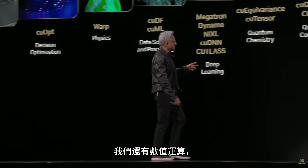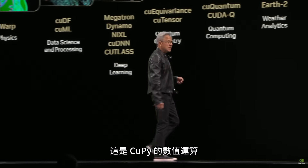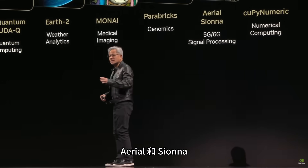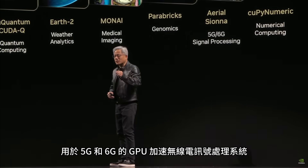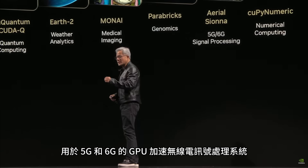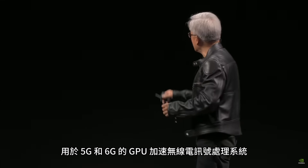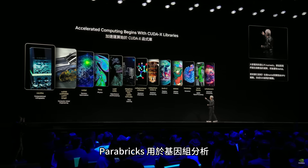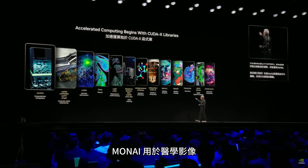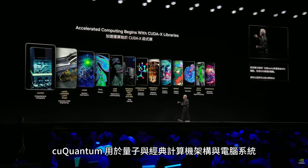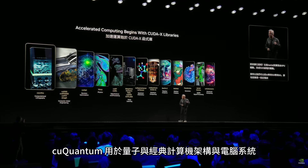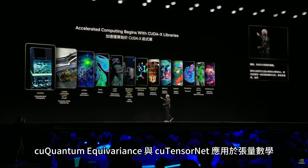We also have numerics. This is CUDA Numeric, Ariel and Shona. Ariel is the world's first GPU-accelerated radio signal processing for 5G and 6G. Parabricks for genomics analysis, Moni for medical imaging, Earth 2 for weather prediction, cuQuantum for quantum classical computer architectures and computer systems, cuEquivariance and cuTensor.